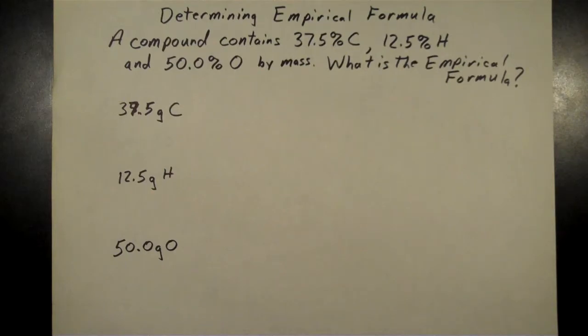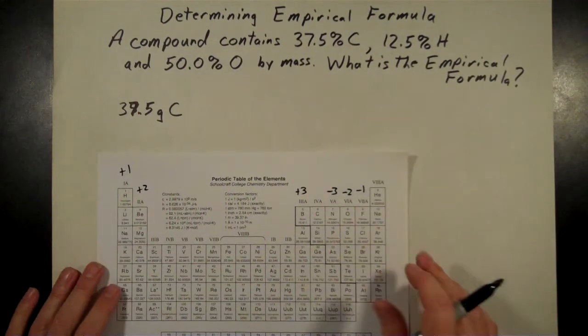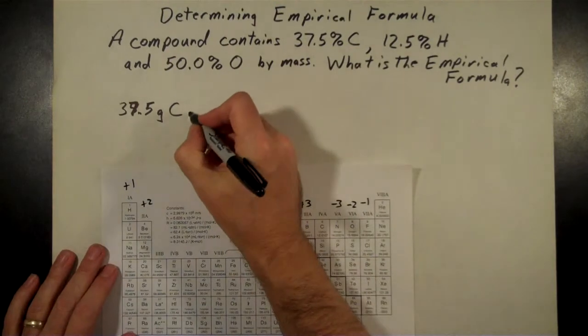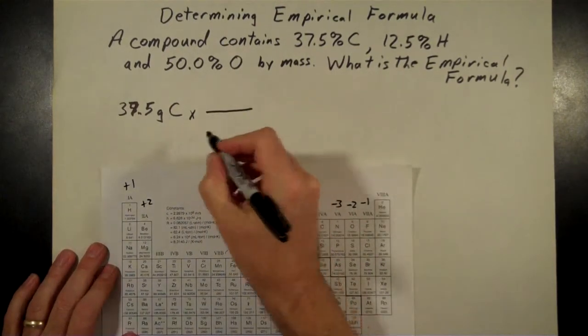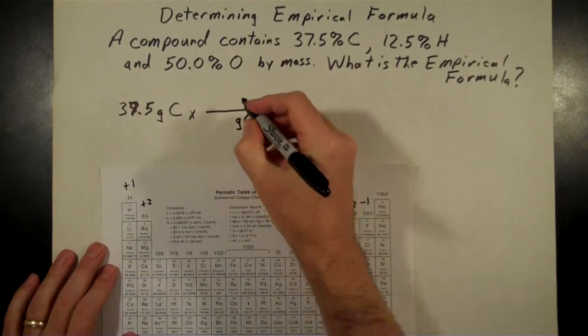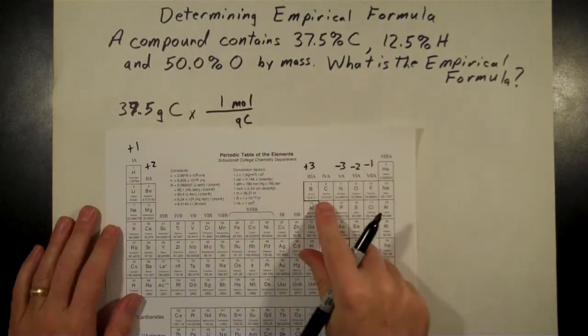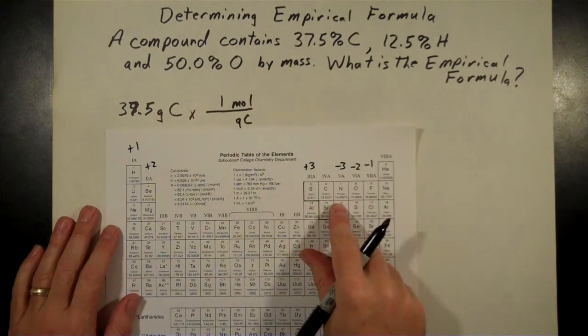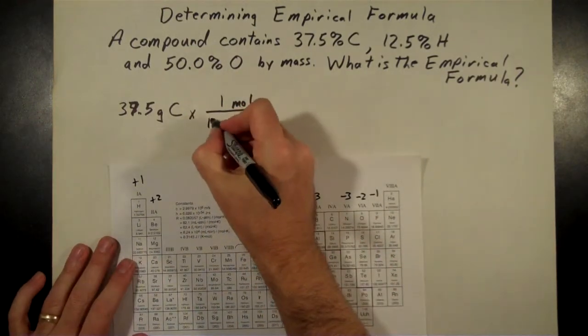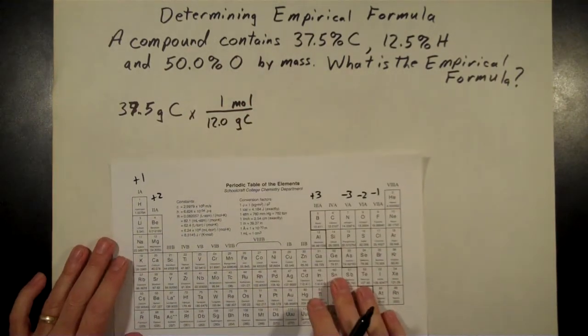And from here on, it's just like what we've done in the other example. We're just going to take each of these mass amounts, convert them into mole amounts. And so we want to cancel out the grams of carbon. So I'm going to put that in the denominator, convert that to moles of carbon, one mole. And so from the periodic table, it's 12.0 or 12.01. I'm just going to go one place after the decimal for that. So 12.0 there.